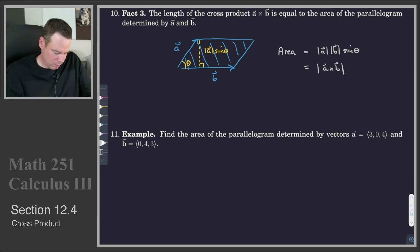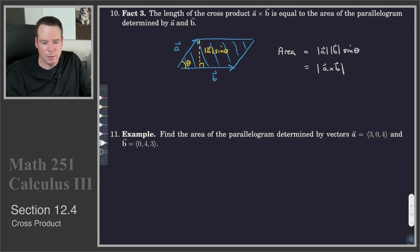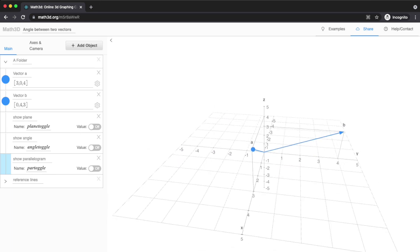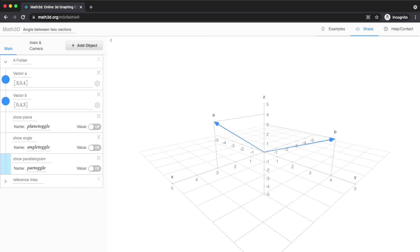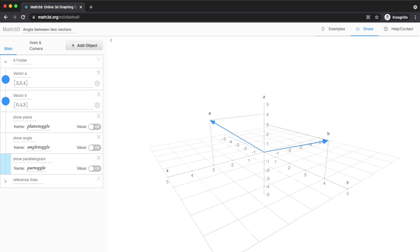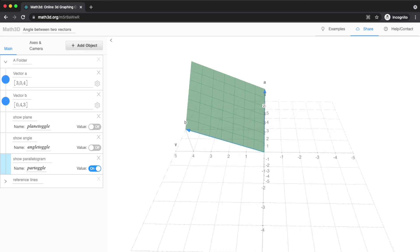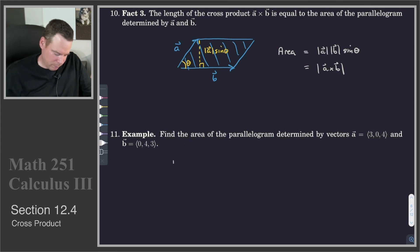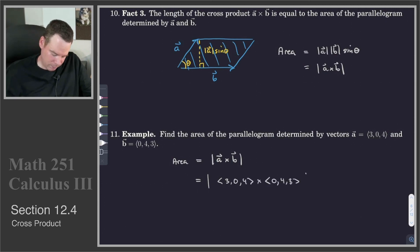Let's use this to do an example: find the area of the parallelogram determined by the vectors A = (3, 0, 4) and B = (0, 4, 3). These are the vectors we worked with in the dot product section. The parallelogram they determine is shown visually. The area of the parallelogram equals the magnitude of A cross B, so we compute the cross product of (3, 0, 4) and (0, 4, 3) and then take its magnitude.